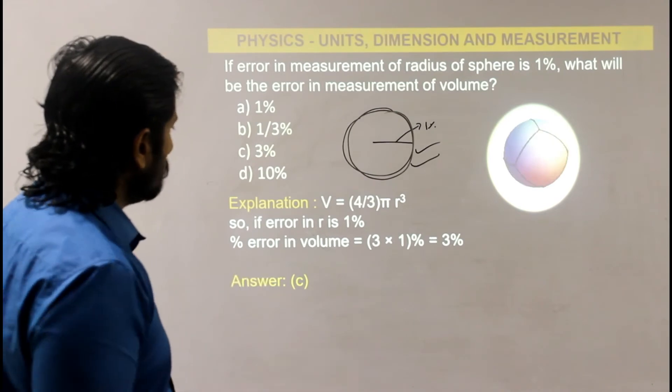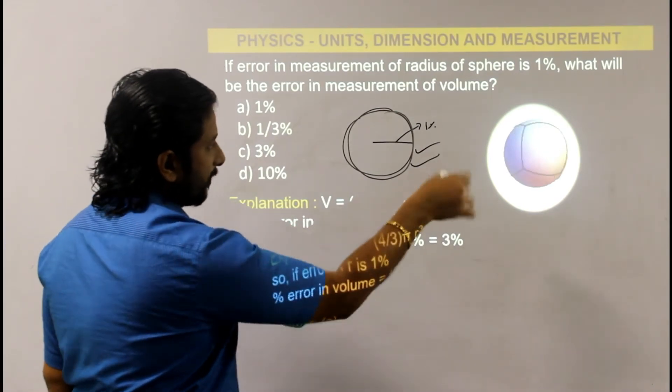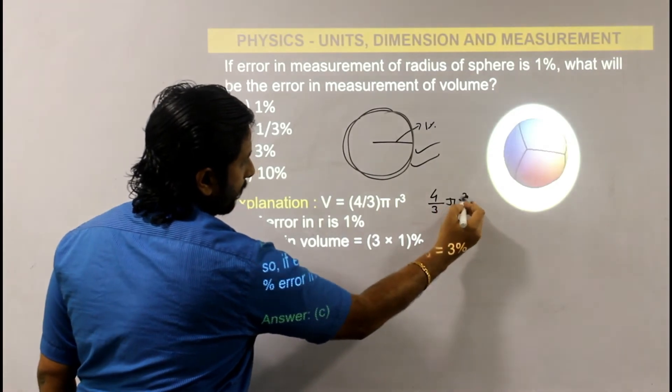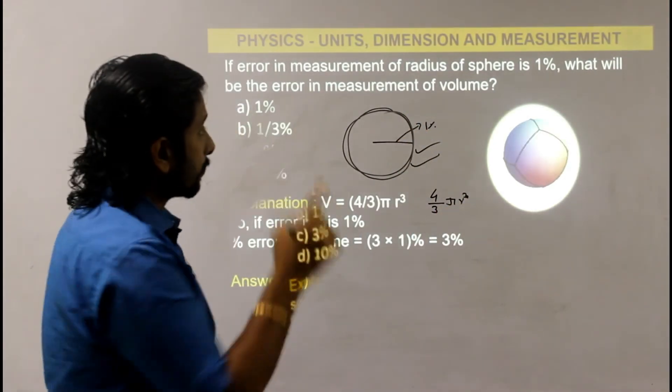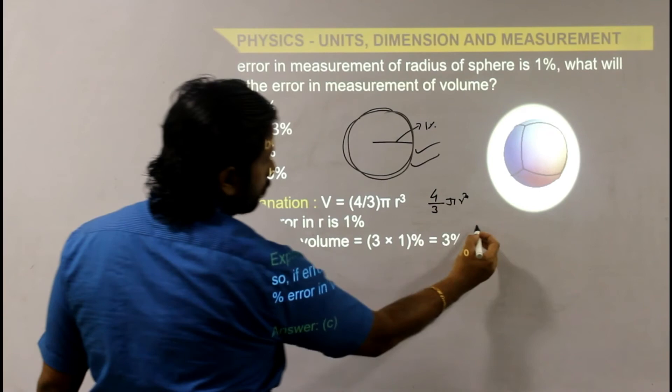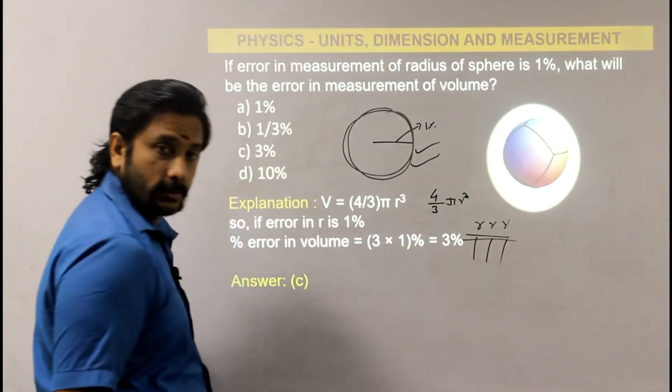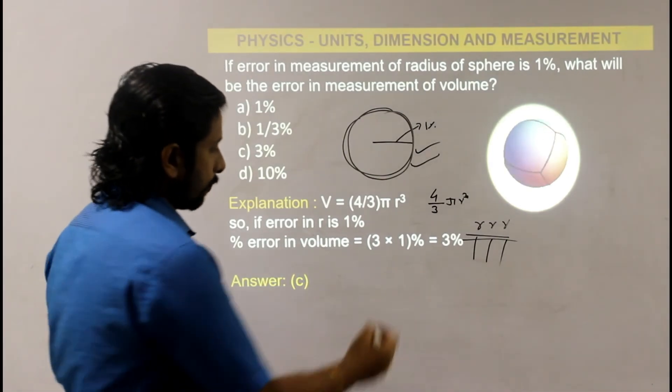Volume of a sphere: V = (4/3)πr³. The radius r has 1% error. Obviously, since the volume is (4/3)πr³, the error will be 3 times 1%, which is 3%.